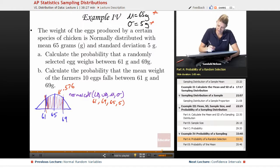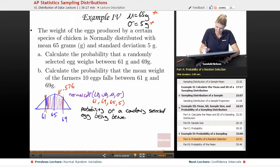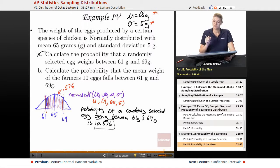the probability of a randomly selected egg being between 61 grams and 69 grams is 0.576, no problem. So let's look at the next one.